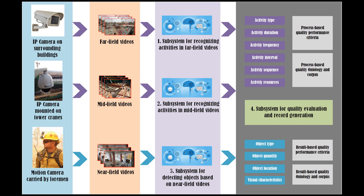To improve quality management in job fields, we develop PI, which is short for Project I. PI is a vision-based system. It detects construction-related objects, recognizes the activities of workers on foot in construction plants, and determines if there are any quality deviations or defects within these site activities.